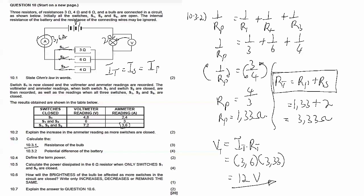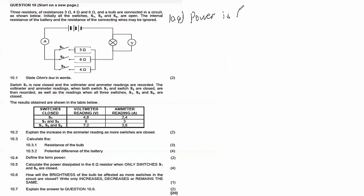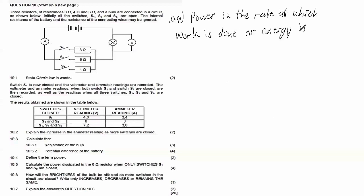Question 10.4 says: define power. Power is the rate at which work is done or energy is dissipated (transferred). You can say 'dissipated' or 'transferred' — both are acceptable. 'Dissipated' is just a more advanced vocabulary choice.